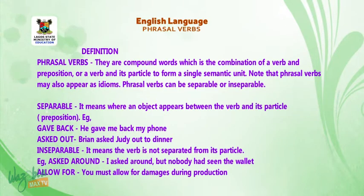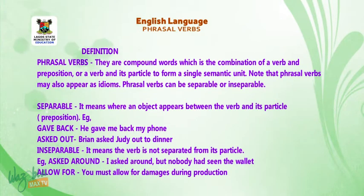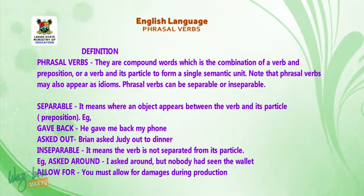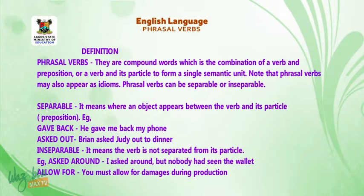Inseparable means the verb is not separated from its particle. For example, 'ask around': I asked around but nobody had seen the wallet — there is no word between 'ask' and 'around'. Another example, 'allow for': you must allow for damages during production. These two examples are inseparable phrasal verbs.